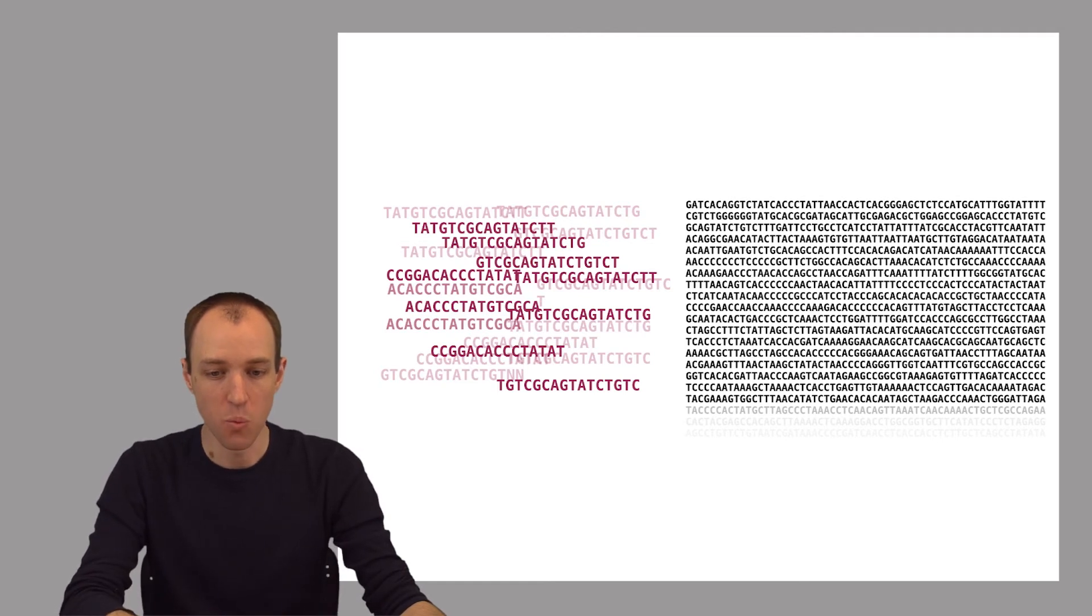So we can take one of your sequencing reads, one of the sequencing reads from your genome, and essentially hold it up to the reference sequence and look for the spot where that read matches most closely. And the spot where it matches most closely is our best guess as to where it originated, as to where it belongs with respect to that genome.